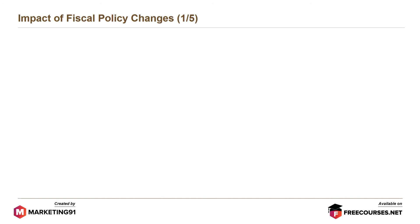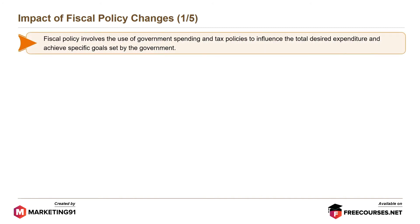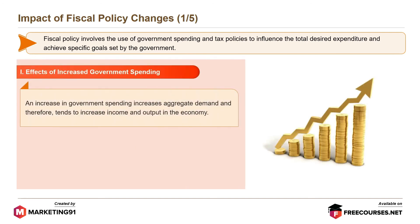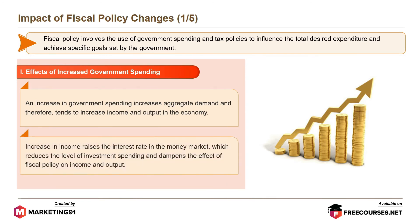Moving on to the impact of fiscal policy changes. Fiscal policy involves the use of government spending and tax policies to influence total desired expenditure and achieve specific goals set by the government. An increase in government spending increases aggregate demand and therefore tends to increase income and output in the economy. Increase in income raises the interest rate in the money market, which reduces the level of investment spending and dampens the effect of fiscal policy on income and output.